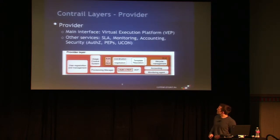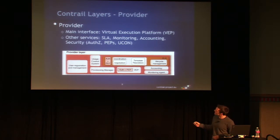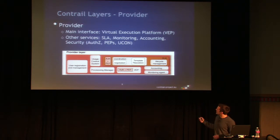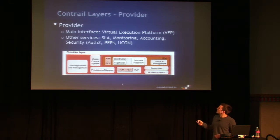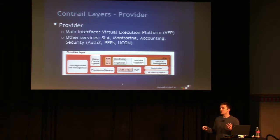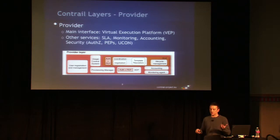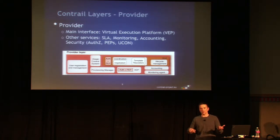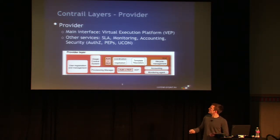On the provider level, we have some counterparts to the federation level — for instance, a usage control system, lifecycle management, and coordination in the SLA manager. But the main domain service on the provider level is the VEP — the Virtual Execution Platform. This is basically the interface towards the provider. So if we have several providers like OpenStack, OpenNebula, or Amazon, the communication to that provider goes through the VEP.